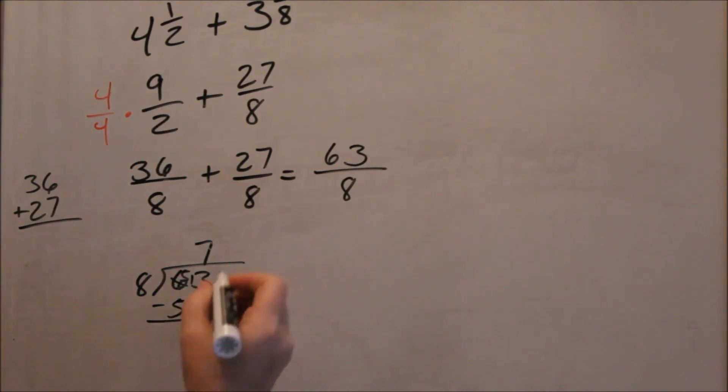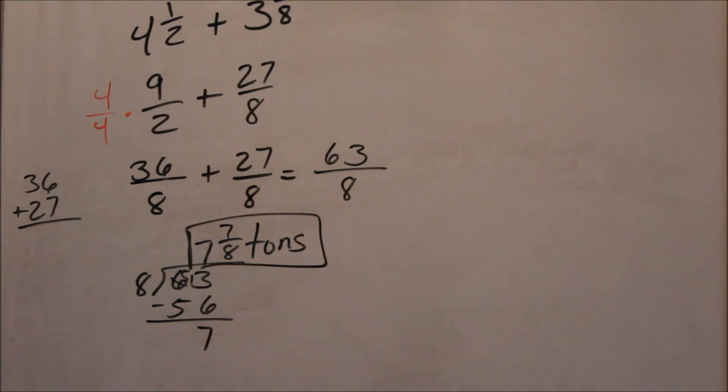Subtract to get 7. So, your remainder becomes the new numerator, 7, and then 40... your denominator always stays the same. So, 7 and 7 eighths, it's a word problem. What does that represent? It represents tons of hay. So, 7 and 7 eighths tons of hay.